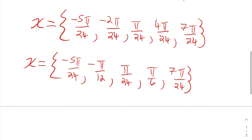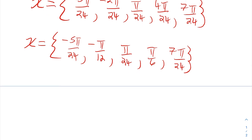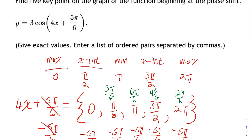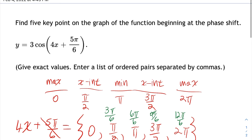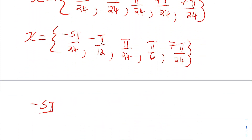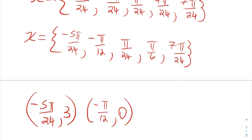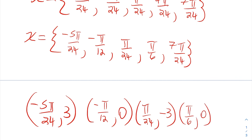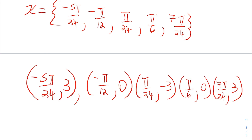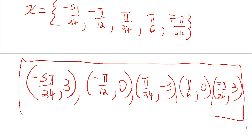Those are the x values for my five key points. The first of the five key points is a maximum, then an x-intercept, then a minimum, then another x-intercept, then a maximum. The maximum values are going to be 3 and the minimum values are going to be negative 3. So the five key points are: negative 5 pi over 24 with y = 3 (the phase shift, first key point); negative pi over 12 with y = 0 (an intercept); pi over 24 with y = negative 3 (the minimum); pi over 6 with y = 0 (another intercept); and 7 pi over 24 with y = 3 (another maximum).